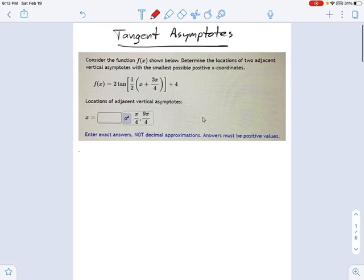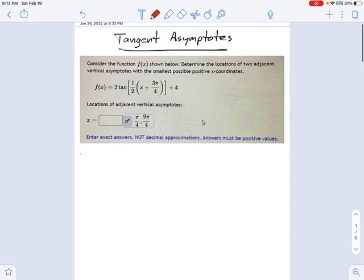In this problem, I'm given a tangent function, and I'm asked to locate two vertical asymptotes. Not only that, I want asymptotes with the smallest possible positive x-coordinates. We'll get to what that word jumble means in a moment.